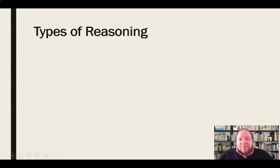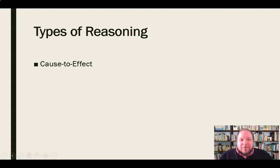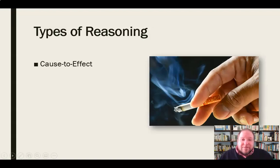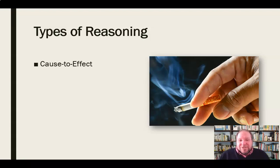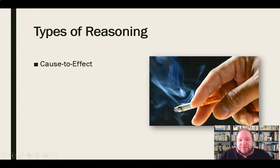When we talk about reasoning, we have a variety of different types. One is cause to effect — that one thing causes the effect of another. A classic example: we know that smoking causes lung damage and causes cancer. We don't have to go too far to explain to people that. So we start with the action — smoking cigarettes — and we can then proceed to the effect: because this person smokes cigarettes, they are more likely to have lung damage and health issues in that arena. That's cause to effect.